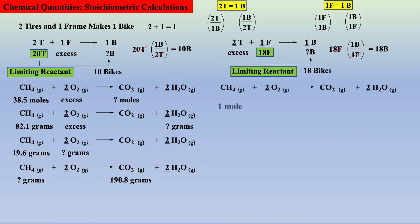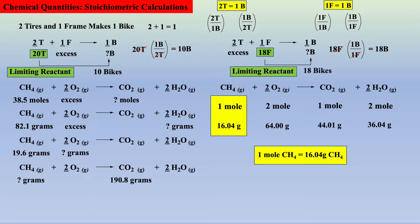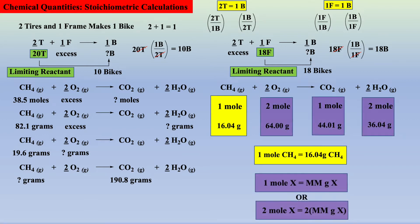We could say one mole of methane requires two moles of oxygen to produce one mole of carbon dioxide and two moles of water. Or, 16.04 grams of methane require 64 grams of oxygen to produce 44.01 grams of carbon dioxide and 36.04 grams of water. Recall, one mole of methane is equal to 16.04 grams, or simply one mole of x is equal to the molar mass in grams of x, which was covered in the previous video.